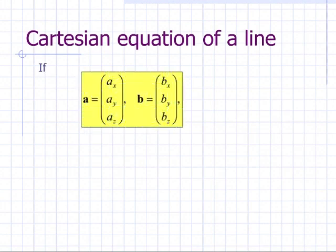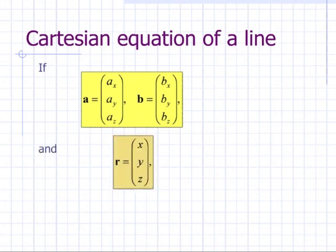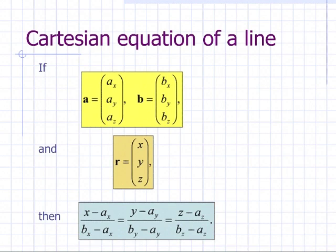Suppose we have a point A in component form (AX, AY, AZ) and B as (BX, BY, BZ). We write an arbitrary point on the line as R = (X, Y, Z) in component form. Then the Cartesian equation of a line is: (X minus AX) over (BX minus AX) equals (Y minus AY) over (BY minus AY) equals (Z minus AZ) over (BZ minus AZ).